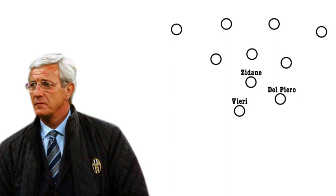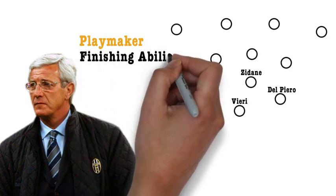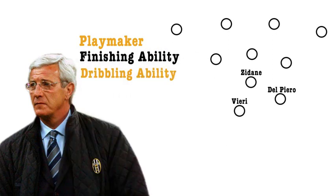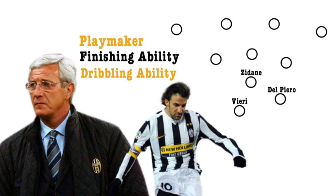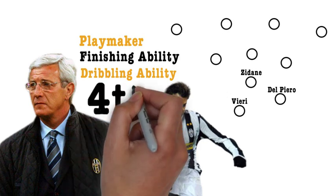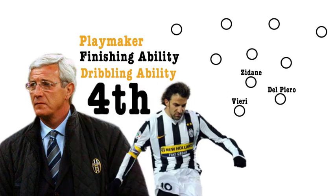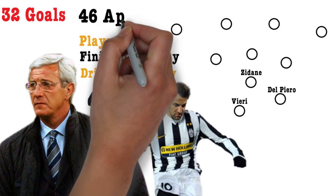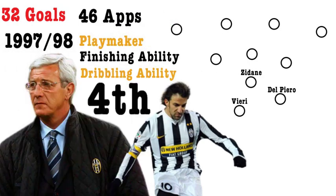The trequatista isn't just a playmaker — he must also have the finishing ability of a striker, accompanied with the dribbling ability of a winger, so he should be more of a goal-scoring threat than an enganche, which is why he'd be given more positional freedom in the side. Del Piero finished 4th in the Ballon d'Or list in 1995 and 1996, and scored 32 goals in 46 games in the 1997-98 season, which proved that he was probably one of the finest trequatistas of the 1990s.